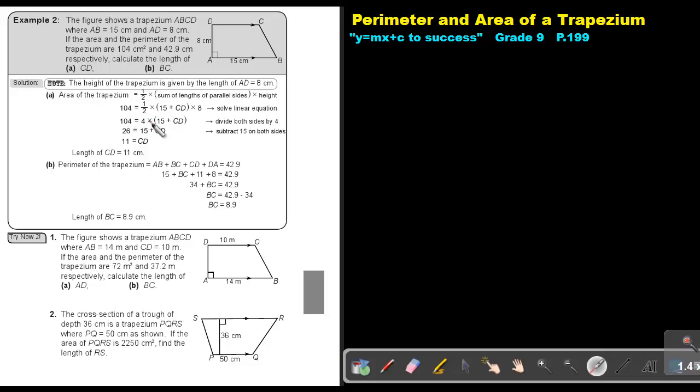And if I want to get rid of this multiply 4, I will divide by 4 on both sides. And then this is positive 15, if I want CD alone, I subtract 15 on both sides. And I get that the value of CD will be 11 centimeters.